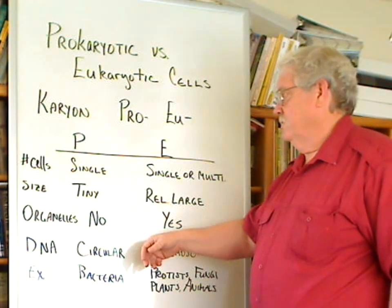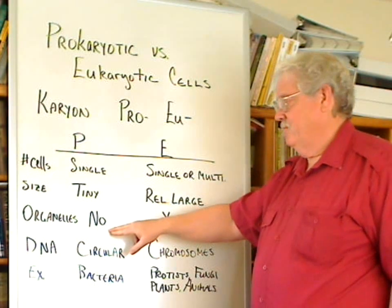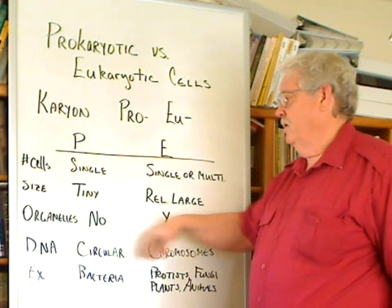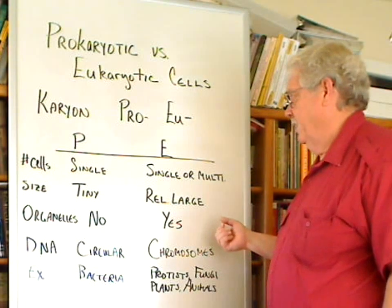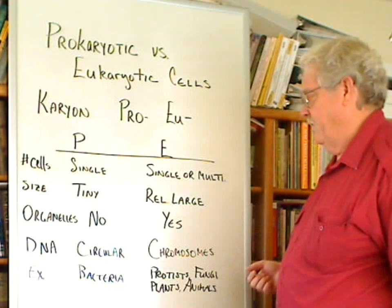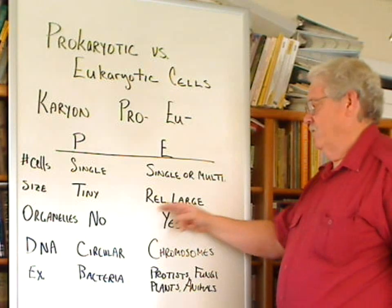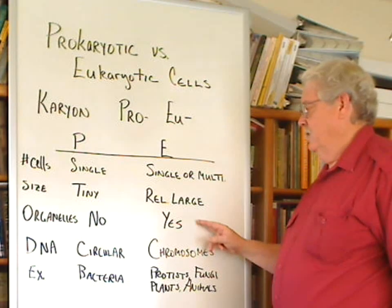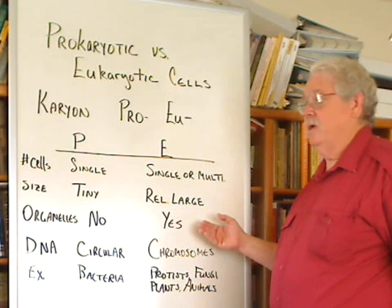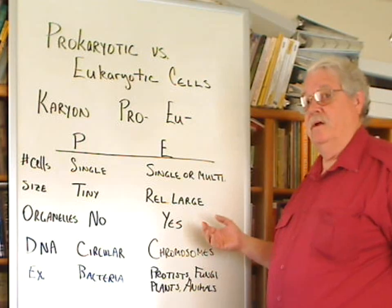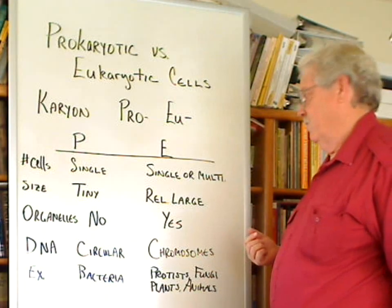Relative to organelles, prokaryotic generally don't have organelles. They have some ribosomes, but they're not the layered organelles that we find in eukaryotic cells. Eukaryotic cells do have a large variety of organelles, including some which appear to be symbiotic bacteria that have been incorporated into those cells at a very early stage.